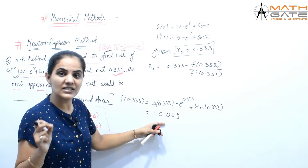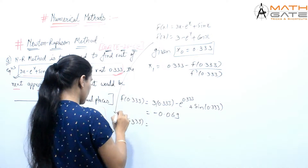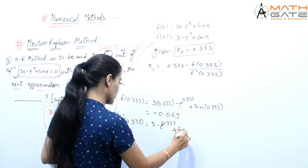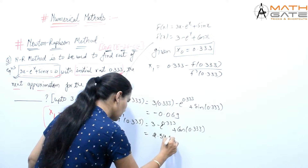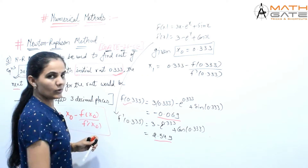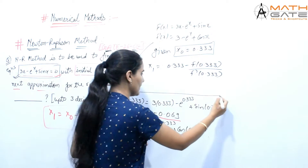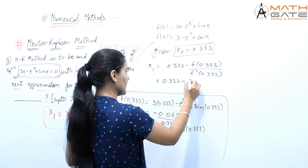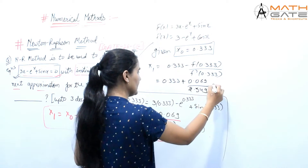Now for the derivative: substituting 0.333 into f'(x) gives 3 minus e to the power 0.333 plus cos(0.333). Simplifying this gives 2.549. We have taken three decimal places throughout. Now substituting into the formula: 0.333 minus (minus 0.069) divided by 2.549. The double negative makes it 0.333 plus 0.069 divided by 2.549.